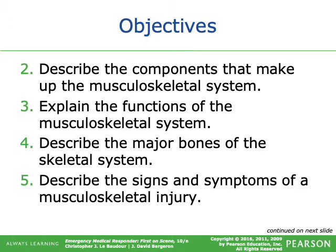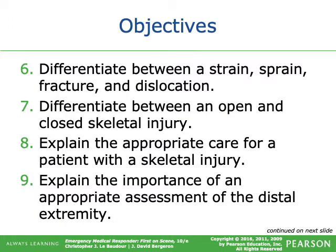Additional objectives include: describing the components and functions of the musculoskeletal system; describing the major bones of the skeletal system; describing the signs and symptoms of musculoskeletal injury; differentiating between a sprain, a strain, a fracture, and a dislocation; differentiating between open and closed skeletal injuries; explaining appropriate care for a patient with a skeletal injury; and explaining the importance of appropriate assessment of the distal extremity.